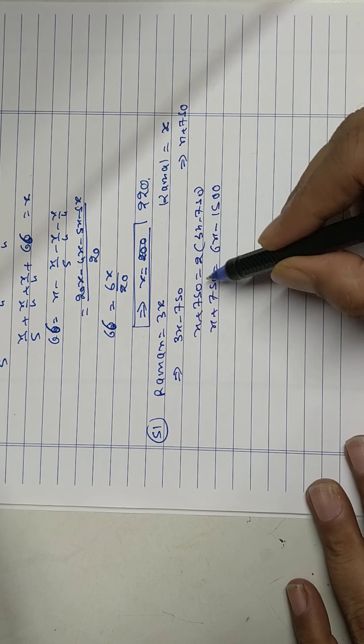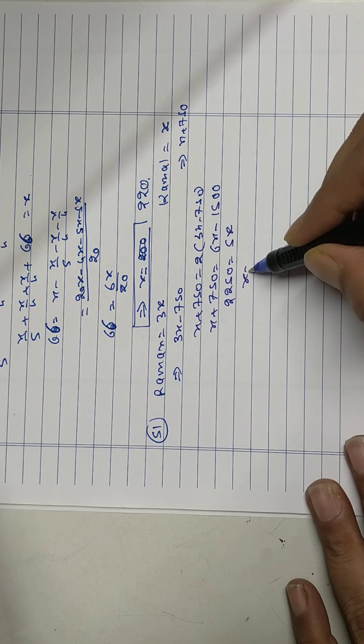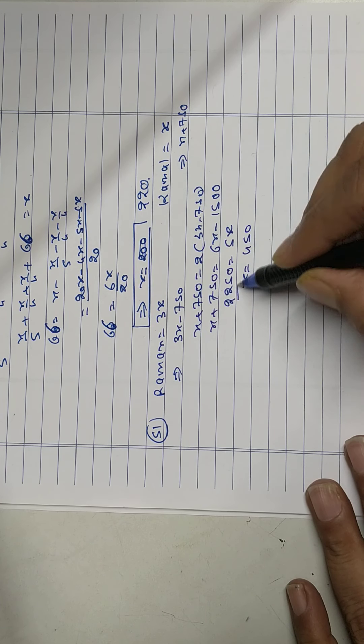Take x here of 1500 here. So 2250 equal to 5x, x equal to 450.